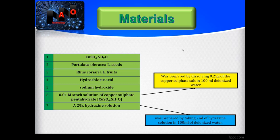A 0.01 M stock solution of copper sulfate pentahydrate was prepared by dissolving 0.25 grams of the copper sulfate salt in 100 milliliter deionized water. A 2% hydrazine solution was prepared by taking 2 milliliter of hydrazine solution in 100 milliliter of deionized water.